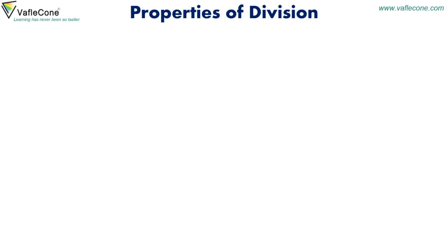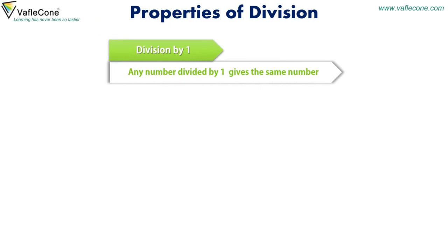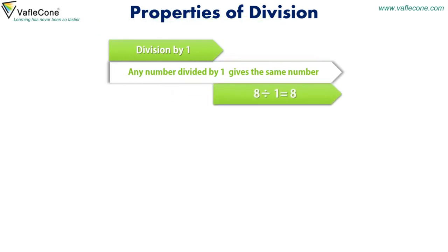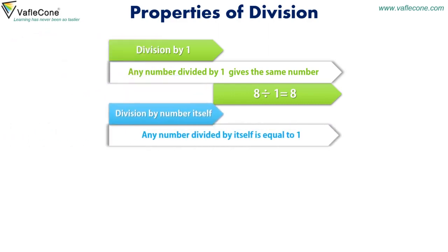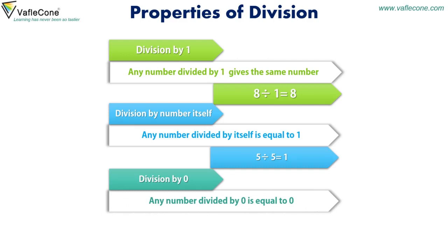Properties of division. Division by 1: any number divided by 1 gives the same number — for example, 8 divided by 1 is equal to 8. Division by the number itself: any number divided by itself is equal to 1 — for example, 5 divided by 5 is equal to 1. Division by 0: any number divided by 0 is equal to 0.